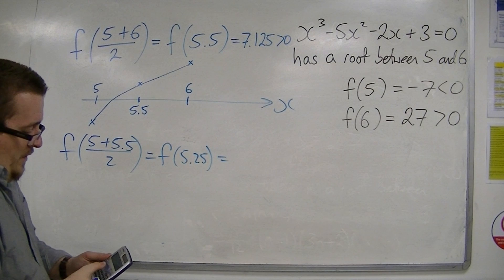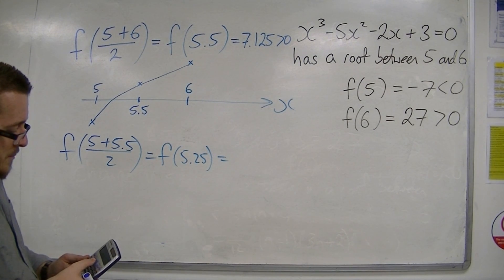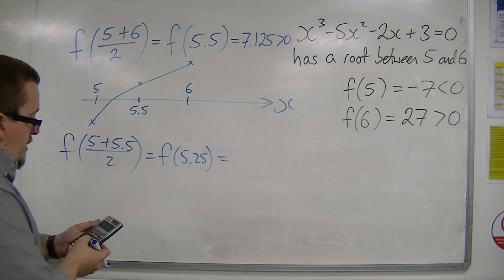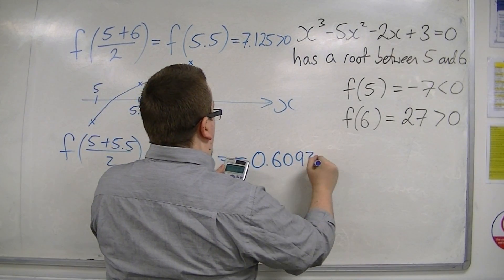So if I look at 5.25, I substitute it in to the formula, and we get minus 39 over 64, which is minus 0.609375.